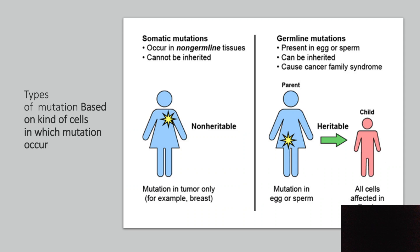What are the different types of mutation? Mutations can take place in any cell. Only those mutations that take place in the germ cell are heritable to the next generation. Based on the kind of cells in which the mutation takes place, mutations can be divided into two types: somatic mutation and germ cell mutation, also called germ line mutation.